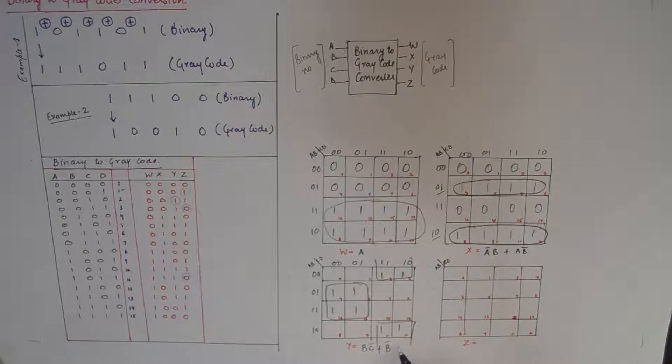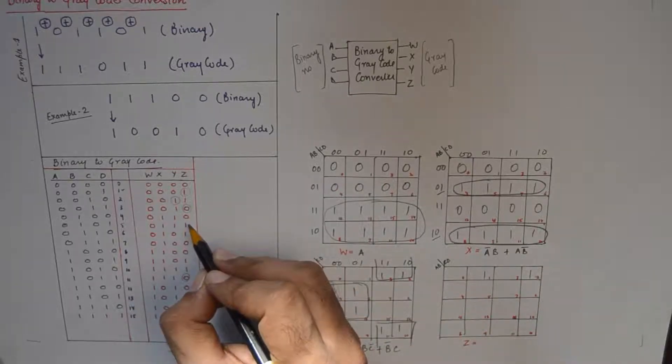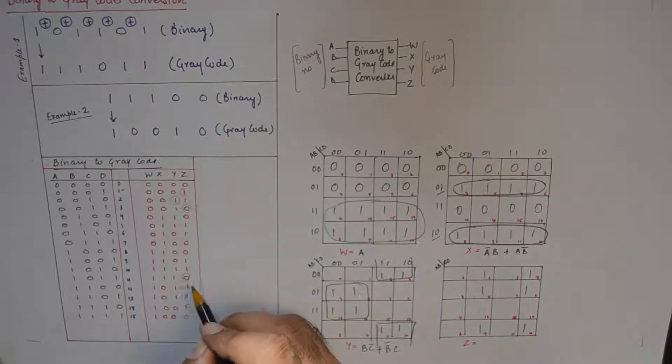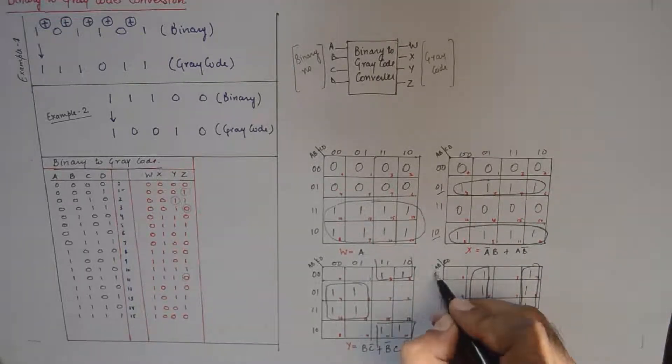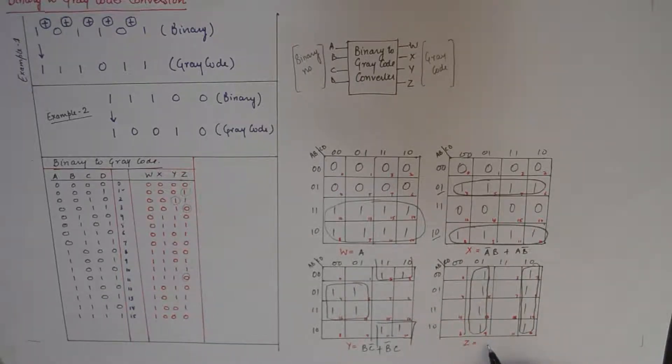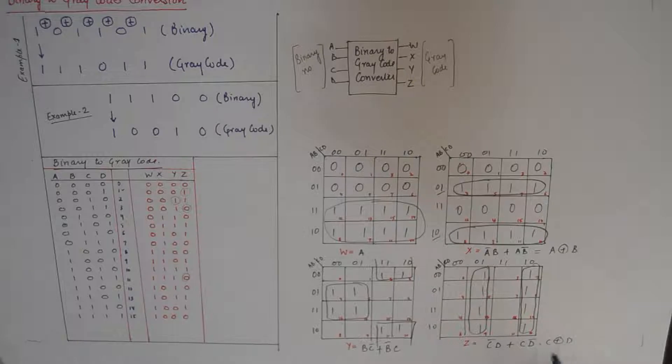Finally we are left with z. So it is 1 on 1 and 2, then it is 1 on 5 and 6, then 9, 10, then finally 13 and 14. So again I have two quads and they'll have a value c d-bar plus c-bar d. Now if you closely look, this is a XOR b, this is c XOR d, and this is b XOR c.